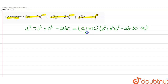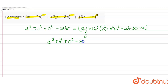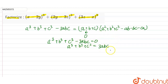Now, if a plus b plus c is equal to 0, then 0 into this will be equal to 0. So we can say: if a plus b plus c equals 0, then a³ plus b³ plus c³ minus 3abc equals 0. Or, transferring negative 3abc to the right hand side, a³ plus b³ plus c³ equals 3abc.